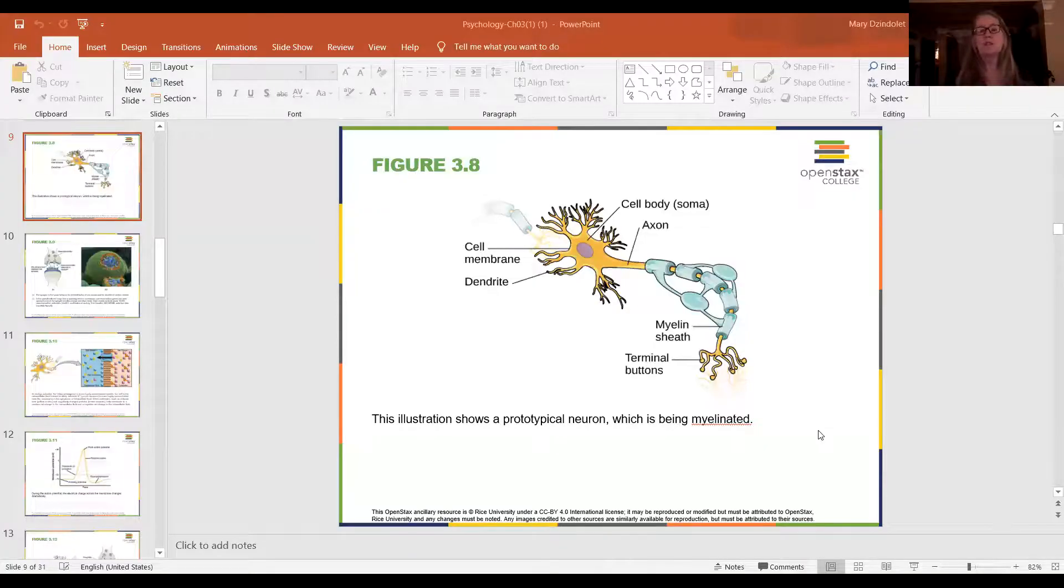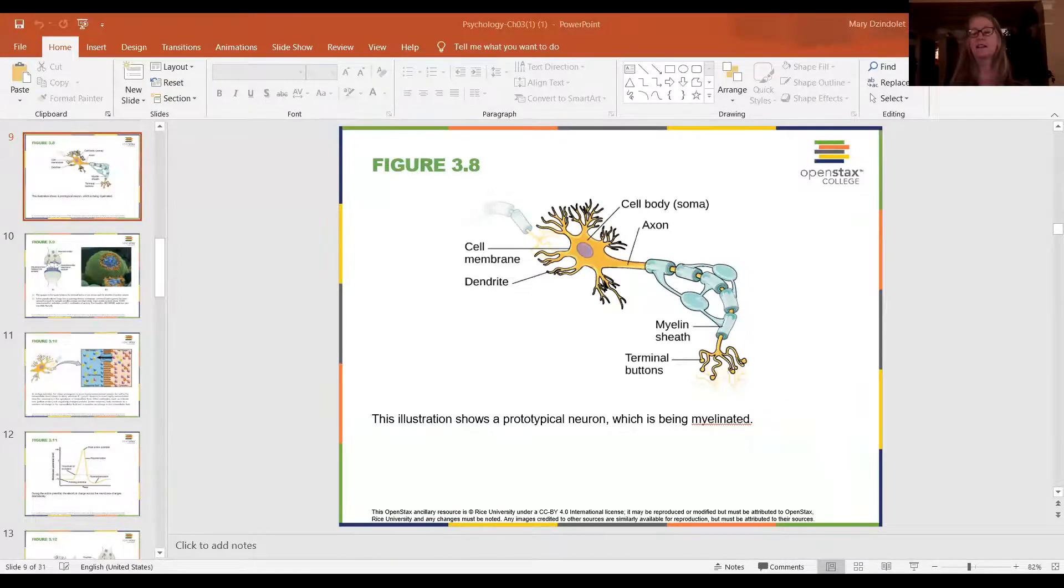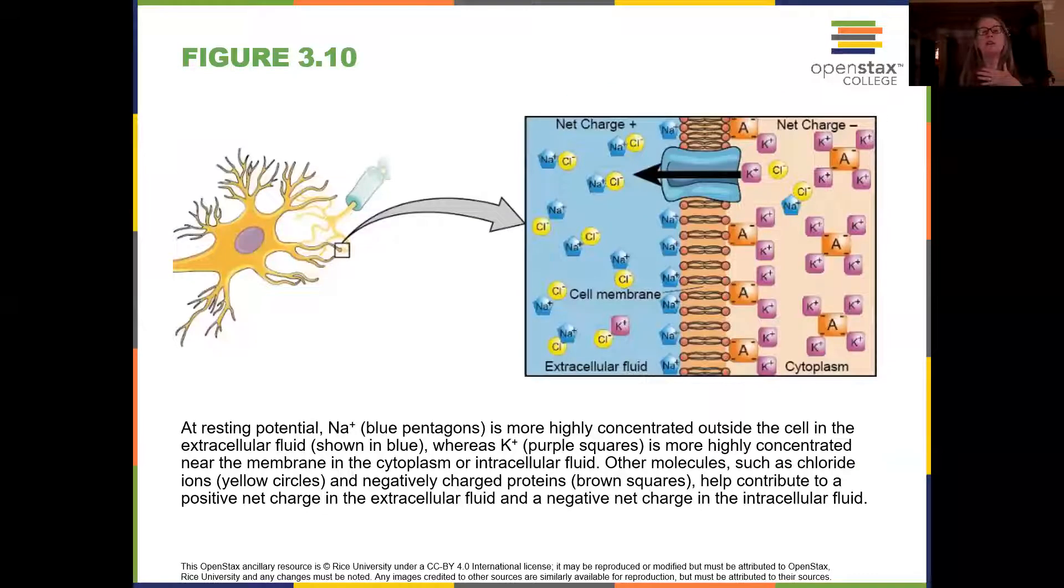They're going to use what we call the all or none principle. This is sort of what we were talking about just a minute ago. It's going to use what's called the all or none principle, which means that if enough of the neurotransmitter is accepted by that second neuron, that receptor neuron, enough neurotransmitter that excites it, then it will fire. If not enough is there, then it won't fire.